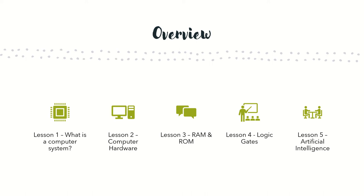Lesson four covered logic gates, and there were three logic gates we went through: AND, OR, and NOT. The last lesson was all about artificial intelligence and robots — understanding how it has suddenly started to develop, what it means for us in an ethical sense, and also how it actually works.